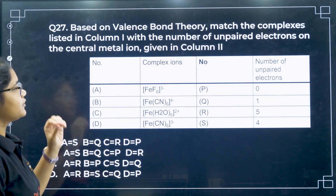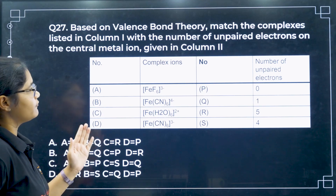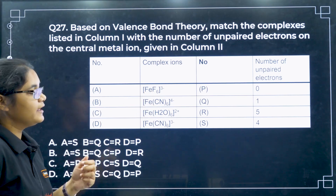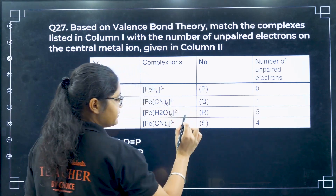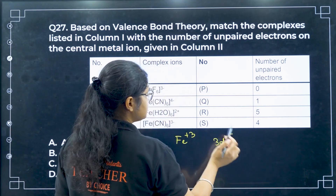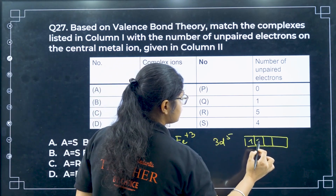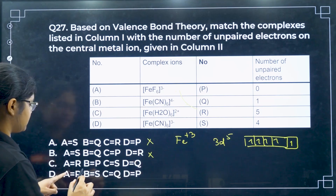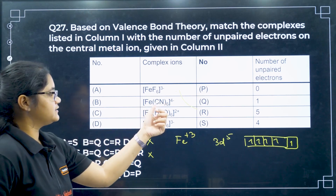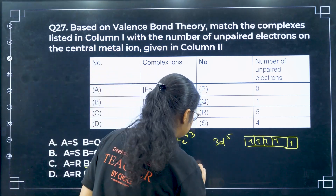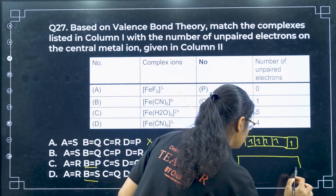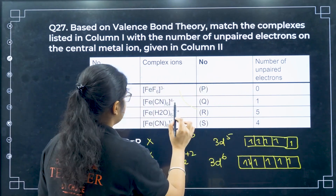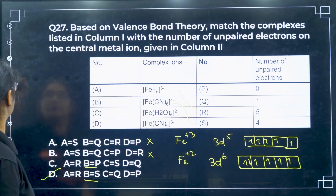Question 27: based on valence bond theory, match complexes with the number of unpaired electrons. For A, FeF6 3−: Fe is in +3 state with a weak field ligand, giving 3d5 configuration — 5 unpaired electrons, so A matches R. For B, Fe(CN)6 4−: Fe is in +2 state giving 3d6 configuration — 4 unpaired electrons, so B matches S. Therefore the correct answer is option D.